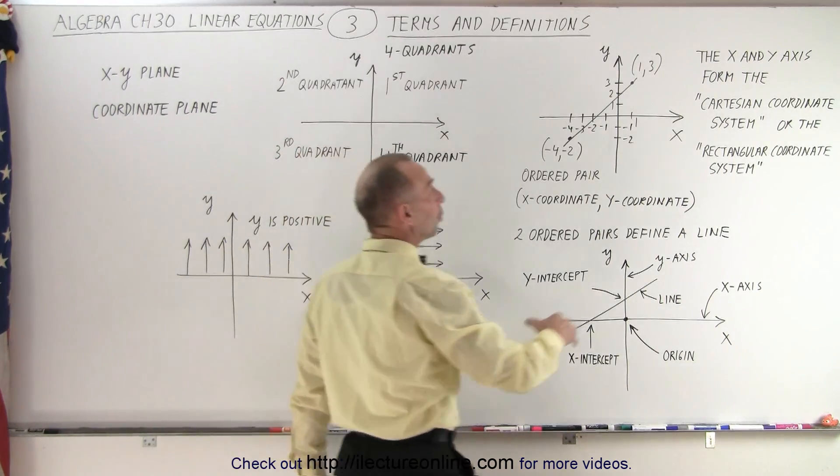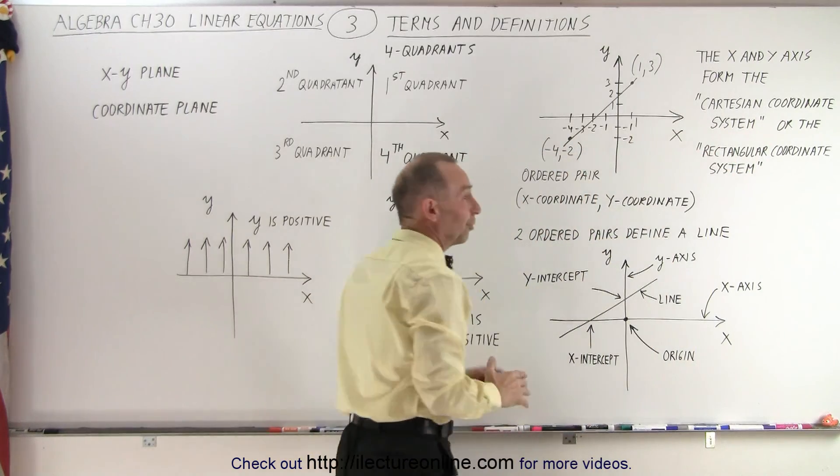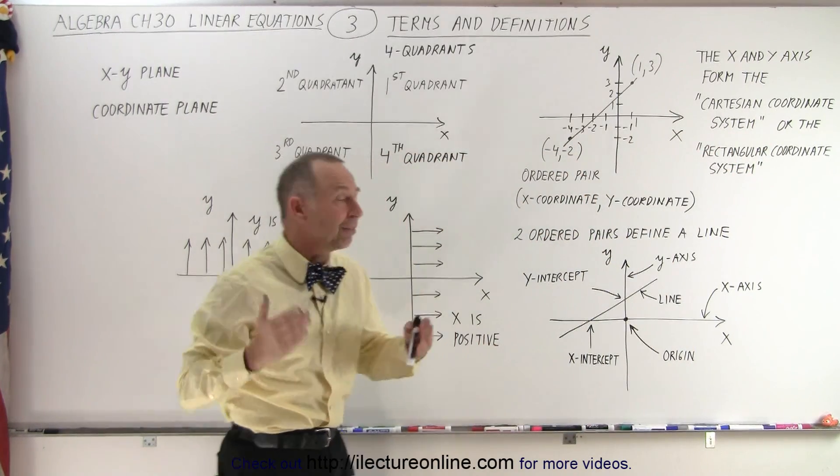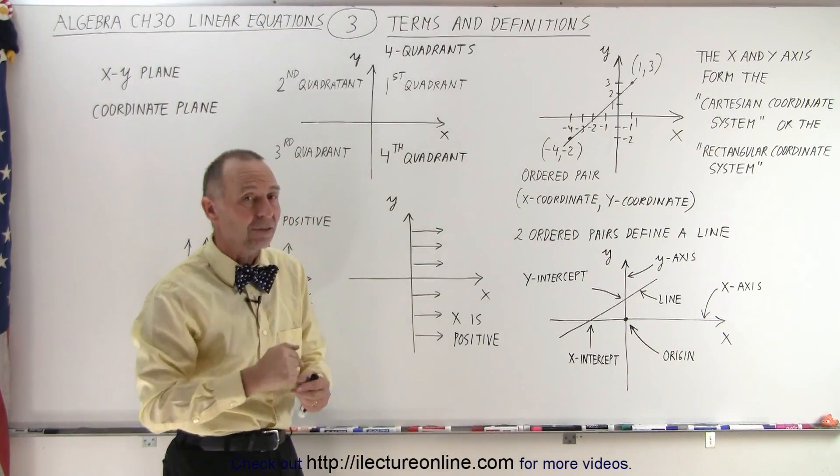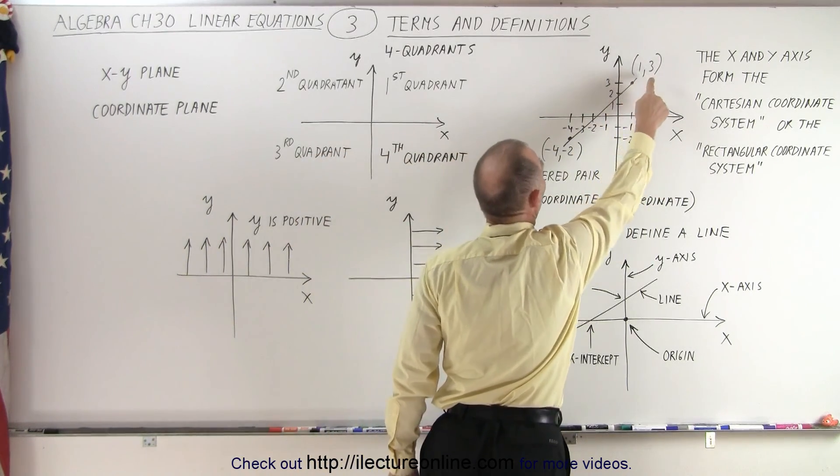So again, realizing that all we have when we talk about the Cartesian or the rectangular coordinate systems, we simply have a plane that's defined by the x-axis and the y-axis. Any point on the plane can be defined by two numbers.